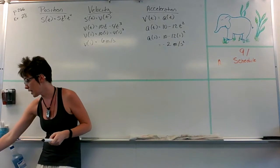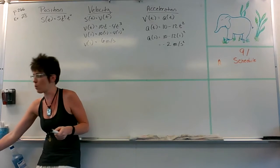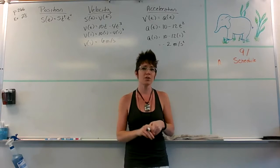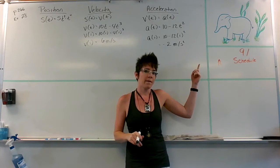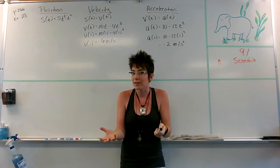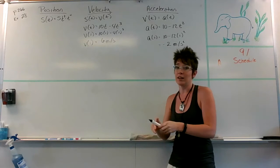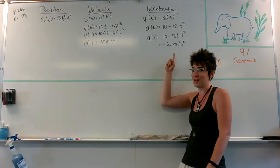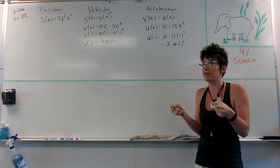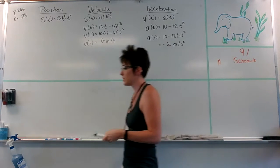Part B says determine whether the particle is speeding up or slowing down at t equals one. Is that a velocity question or an acceleration question? If something is speeding up, you're asking whether your velocity is changing — that's acceleration, a change in velocity. We already found that our acceleration at t equals one is negative two, which means we're slowing down, like driving up to a stoplight with your foot on the brake while still moving forward.